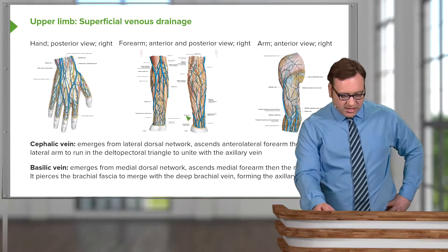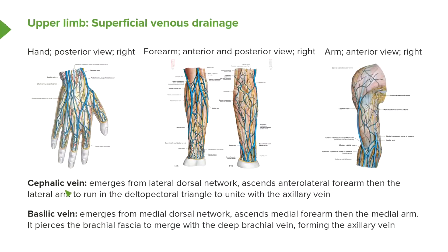Turning back to the superficial veins — the cephalic and basilic veins — on this diagram we can see the hand on one extreme, the forearm in the middle, and the arm on the opposite side. In the hand region we can see the dorsal network, with a more lateral dorsal network and a more medial dorsal network, both receiving veins coming from the digits.